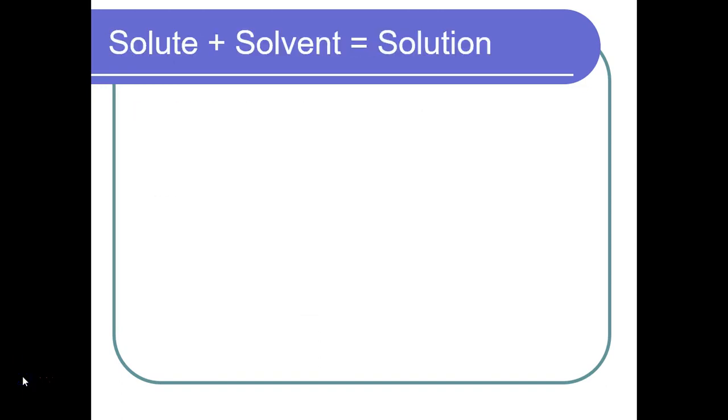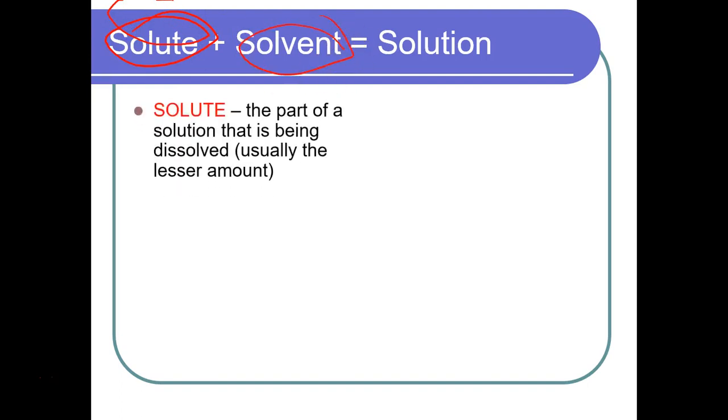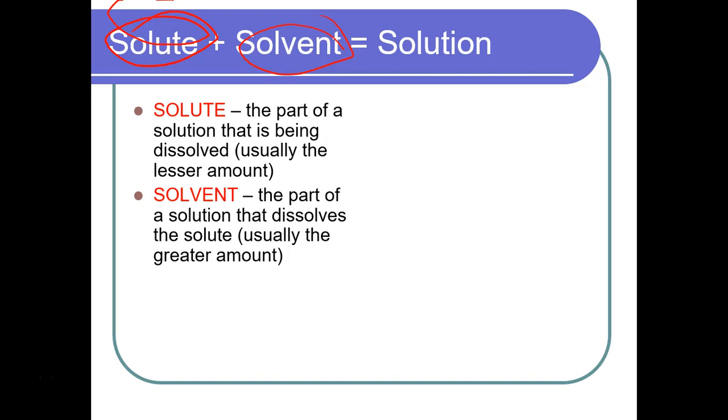The first thing we want to know about solubility and solutions in general is the two components: solute and solvent. Solute is what is being dissolved, solvent is what we're dissolving into, and together they make a solution. You need to remember that solute is what we are dissolving and solvent is what we dissolve into.